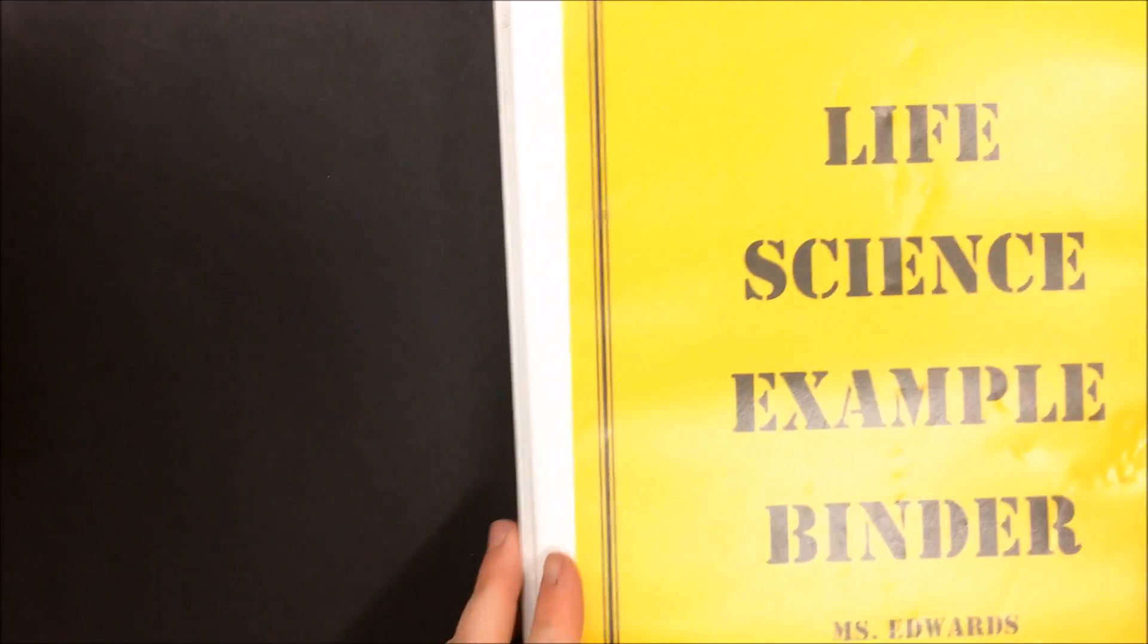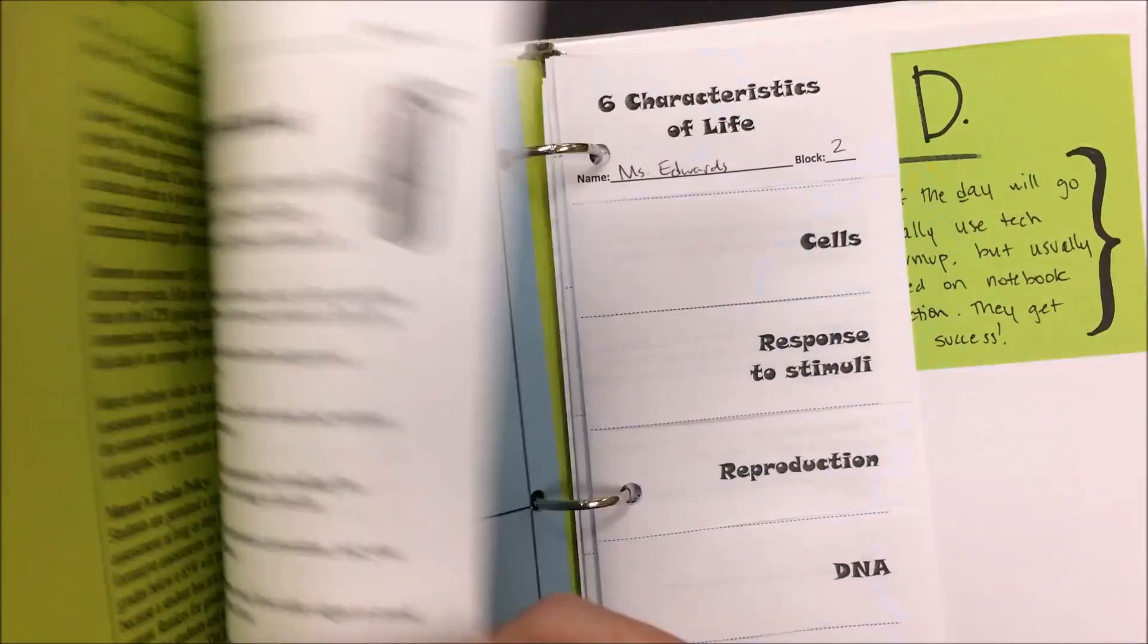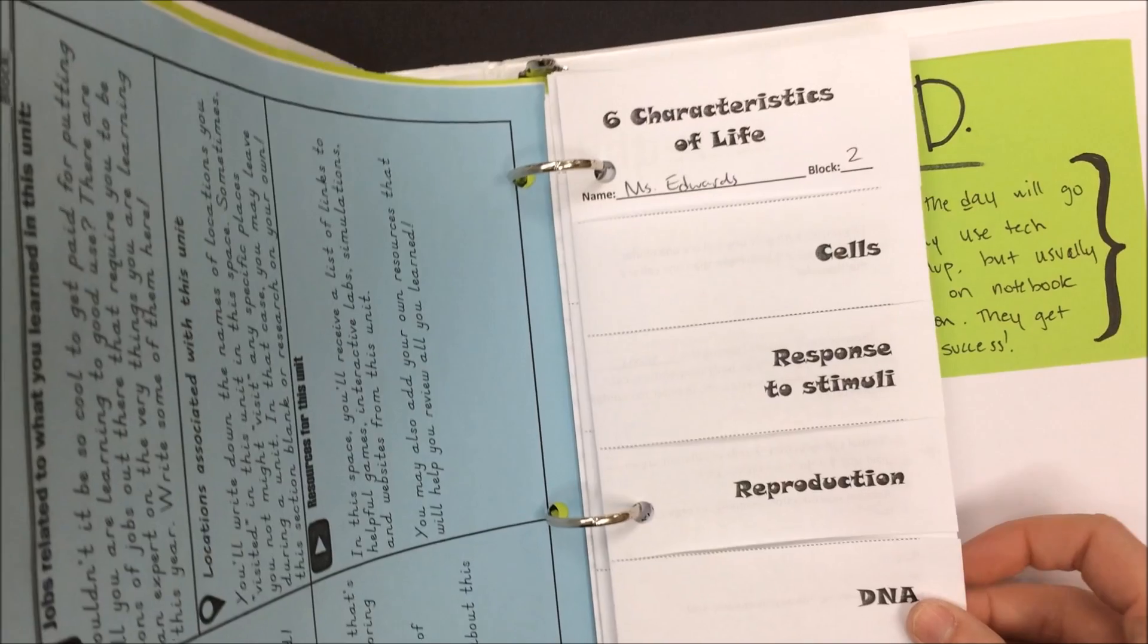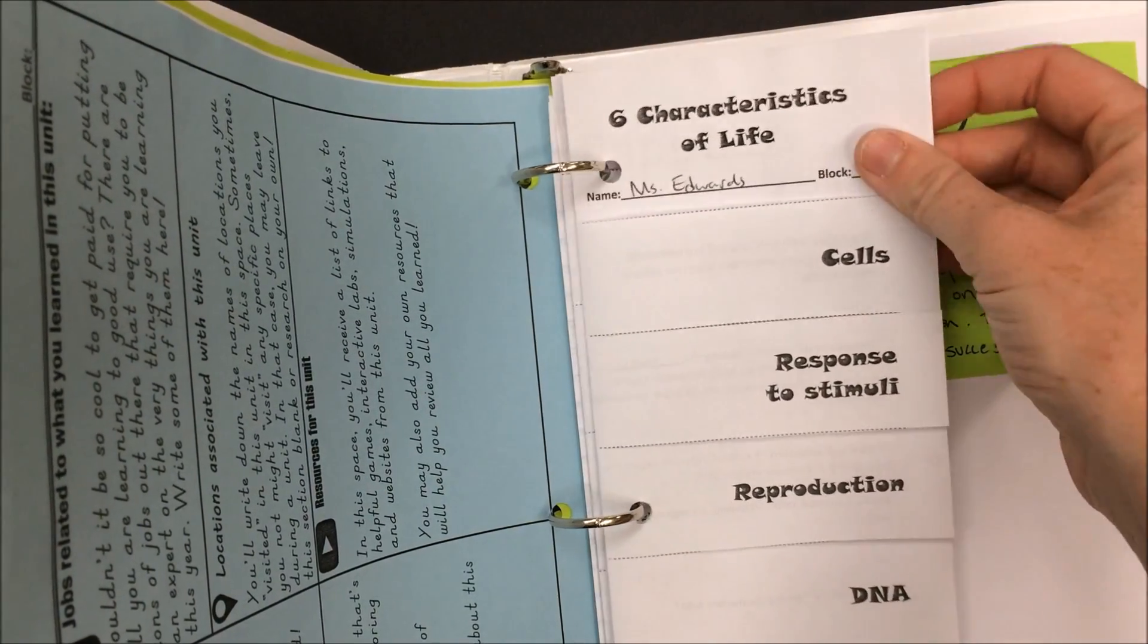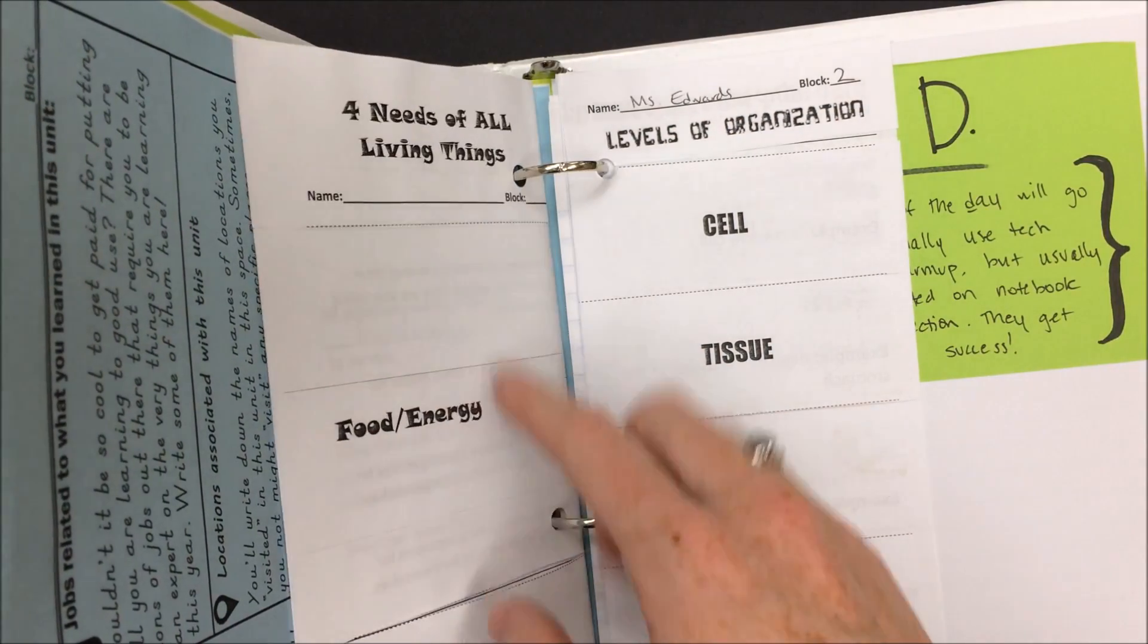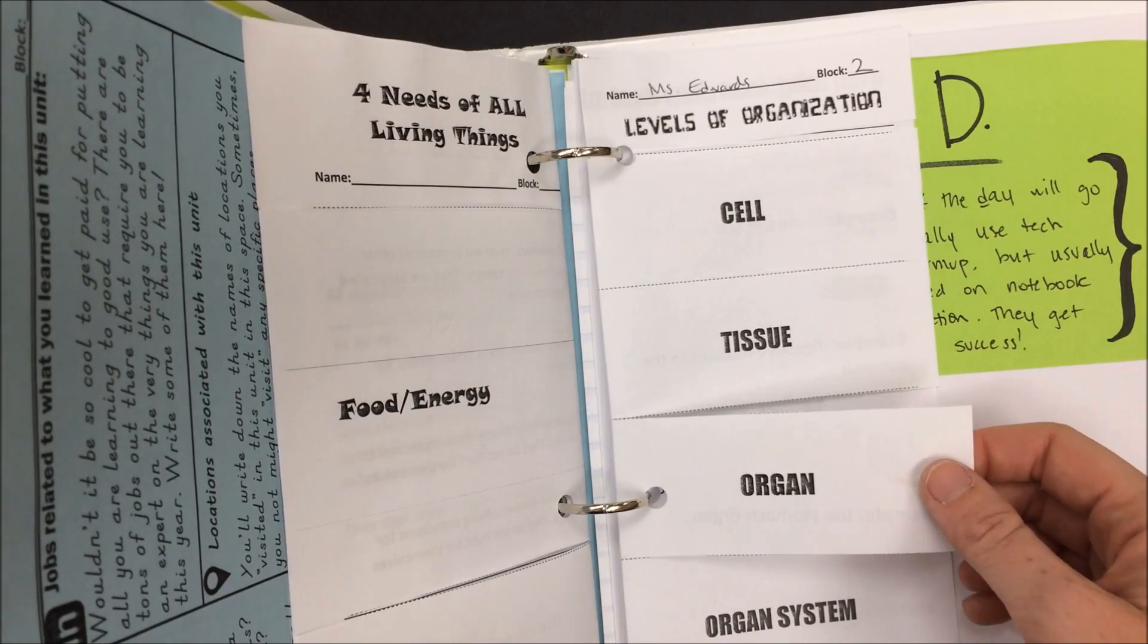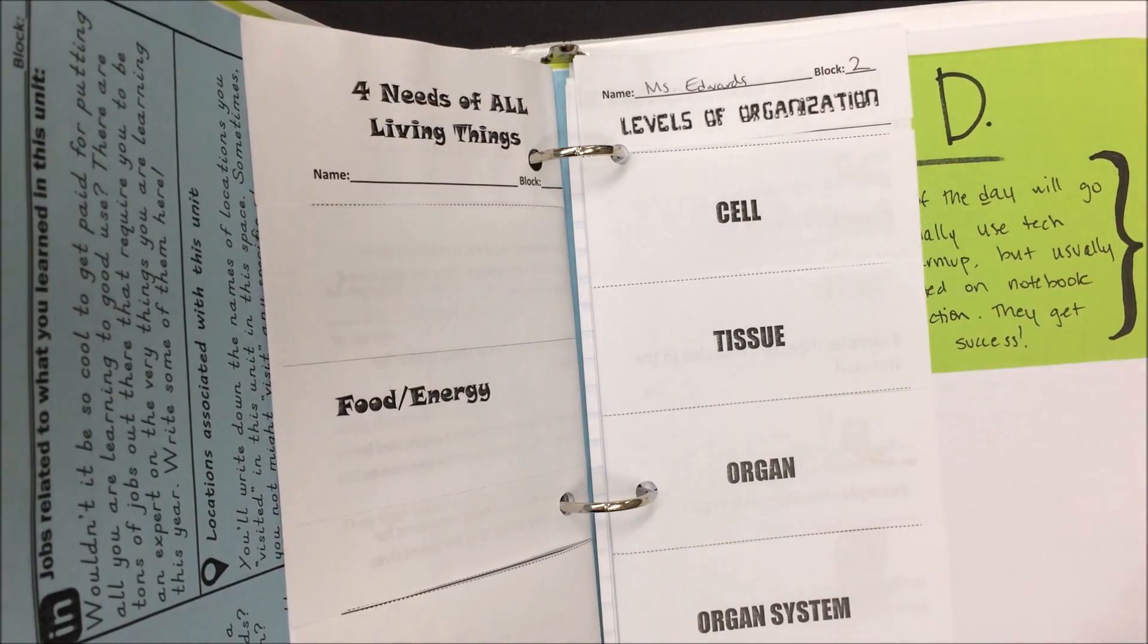Alright folks, let's talk about what you'll need to study for your test on the characteristics of living things. In your VIP section you have two different foldables that we did. One talks about the six characteristics of life on the front and the four needs of all living things on the back. You should study both sides of that as well as the newest foldable, the five levels of organization.